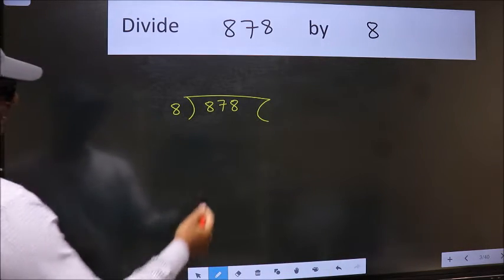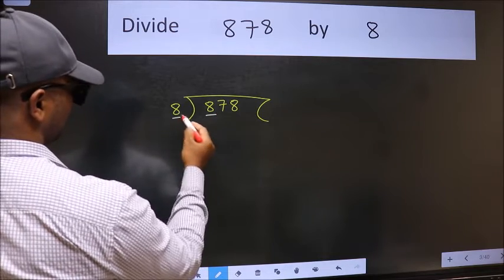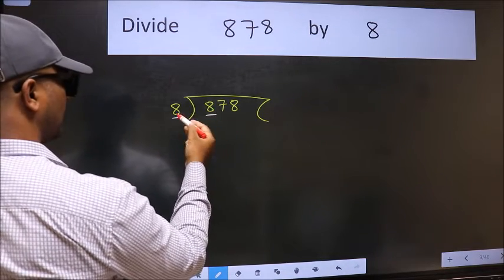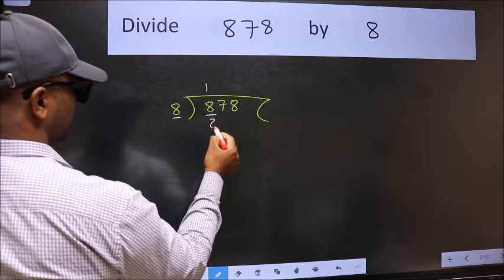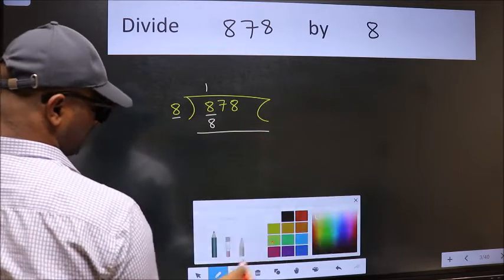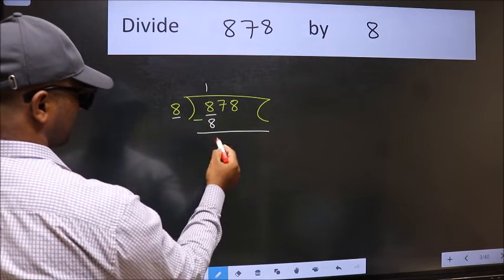Next. Here we have 8 and here 8. When do we get 8 in the 8 table? 8 once 8. Now we should subtract. We get 0.